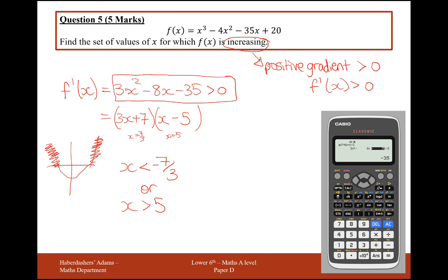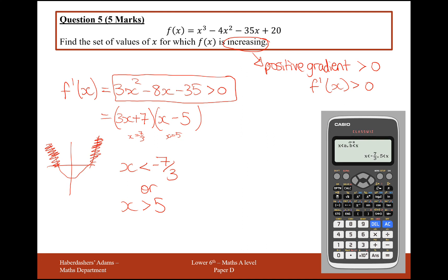Press enter, and you get your solution here. So you can check your answer really easily like that. So x is less than minus 7 over 3 and x is more than 5. Great, so we definitely got that one right. 5 marks.